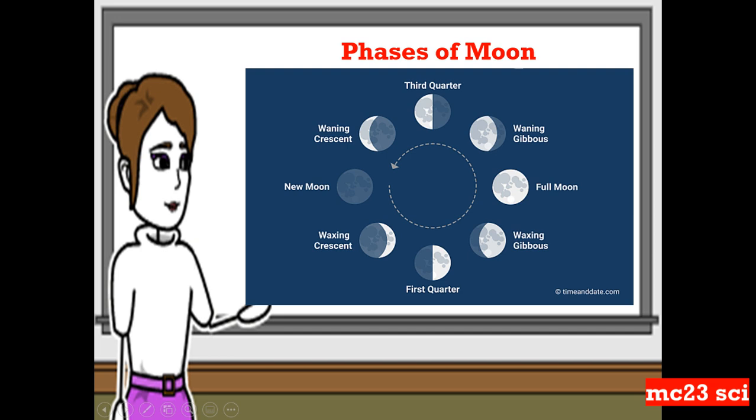So here are the phases of the moon. We first have the new moon, and then the waxing crescent, the first quarter, and the waxing gibbous. Those are the waxing phases of the moon. And the full moon. So after the full moon, the waning gibbous, the third quarter or the last quarter, and the waning crescent.